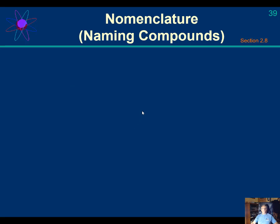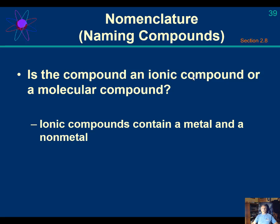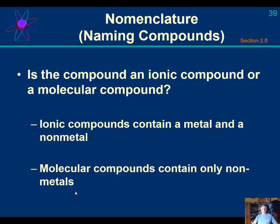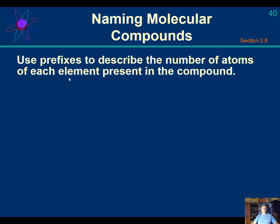So, nomenclature — how to name compounds. Ask yourself: is the compound ionic or is it molecular? An ionic compound is made up of a metal and a nonmetal and forms a big crystalline structure. Molecular compounds contain only nonmetals — carbon, nitrogen, oxygen, phosphorus, fluorine. Naming molecular compounds is pretty easy: you use prefixes to describe the number of atoms of each element in the compound.